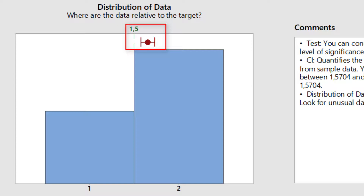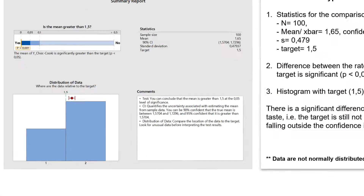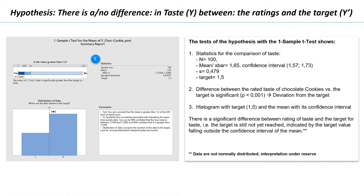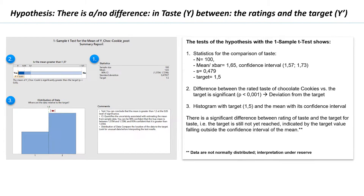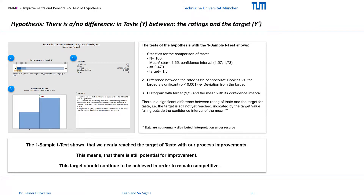That would mean the target value is within the confidence interval of the sample, meaning there is no difference between the data and the target value. But the result is again significant. The mean of the taste ratings is 1.65 and its confidence interval ranges from 1.57 to 1.73. The target value 1.5 is not included, and thus there is a significant difference between the taste ratings and the target. Although we improved the taste of our cookies, we did not reach our target and we don't know what caused it yet.